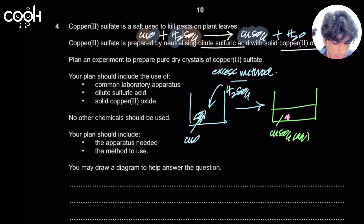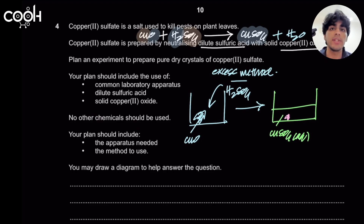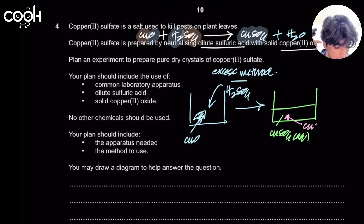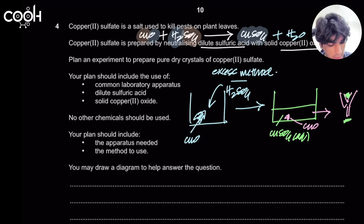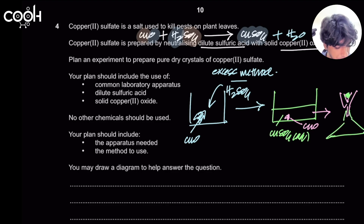You could use copper carbonate or copper hydroxide, but the examiner specifies no other chemicals — only copper oxide is given. So you're left with excess copper oxide in the solution. To remove it from the copper sulfate solution, you perform filtration using a filter funnel and filter paper. The filter paper traps the copper oxide, and the copper sulfate solution passes through as the filtrate.